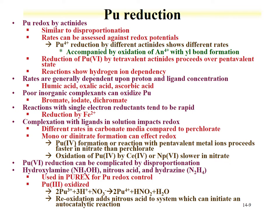There are reducing agents used in the Purex process — hydroxylamine with hydrazine, and production of nitrous acid in nitric acid. Hydroxylamine is used to reduce plutonium from the 4 to the 3. However, plutonium-3 can be oxidized producing nitrous acid, and adding this nitrous acid to the system can run an autocatalytic reaction, which can wind up reducing the plutonium back down.